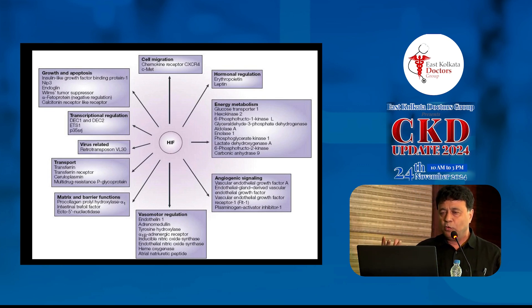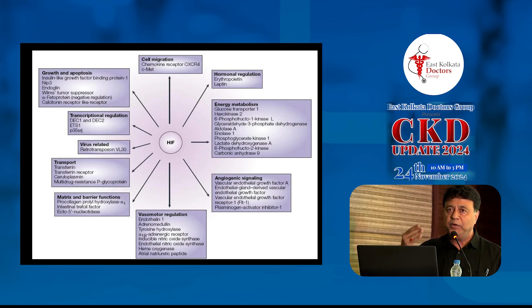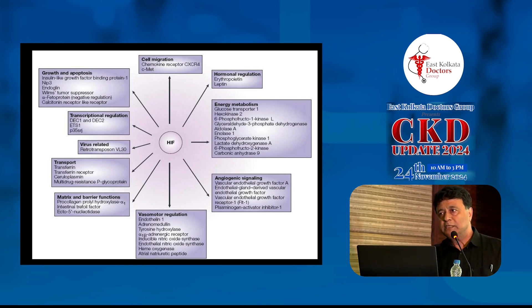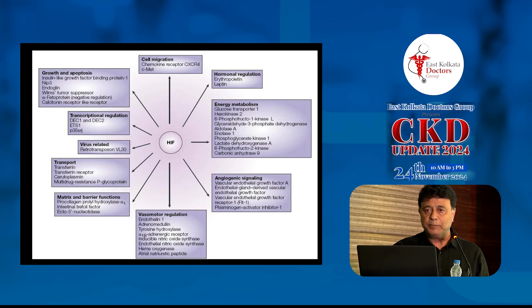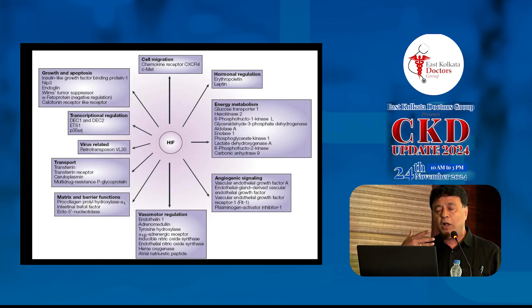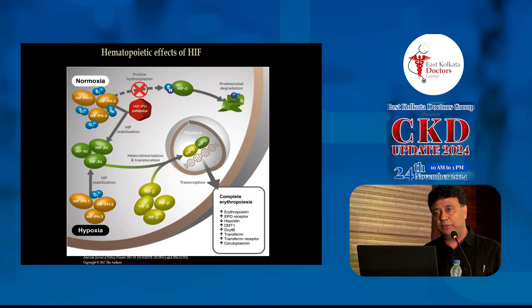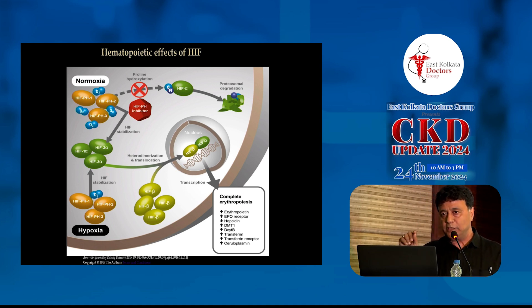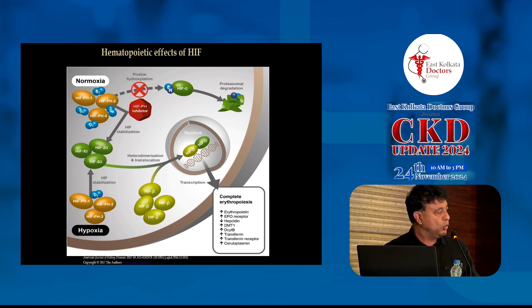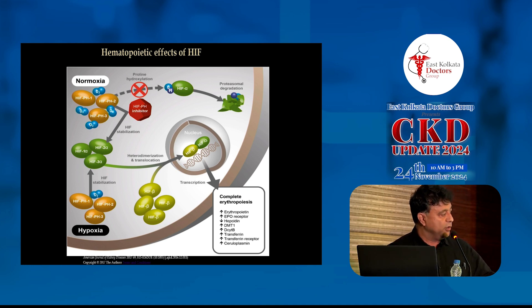Hypoxia Inducible Factor (HIF) is present in every cell in our body. When there is hypoxia, HIF comes into play to prevent cell death and damage until oxygen is restored - shifting metabolic demand to anaerobic glycolysis. HIF transcribes enzymes responsible for anaerobic glycolysis, for erythropoietin production, and over 100 genes. HIF has two subunits: HIF-alpha and HIF-beta. When there is hypoxia, HIF-alpha heterodimerizes with HIF-beta, goes into the nucleus, and stimulates the hypoxia response element - transcribing a complete erythropoietic package: increased EPO, increased EPO receptor, decreased hepcidin, and increased iron absorption-related enzymes.